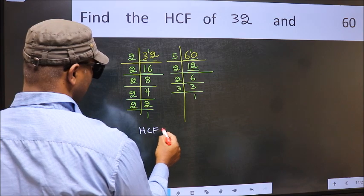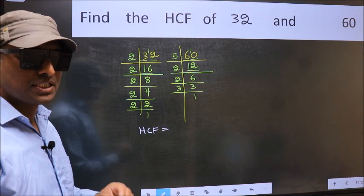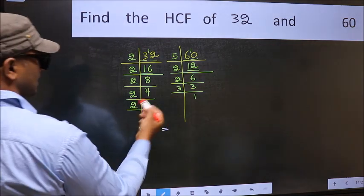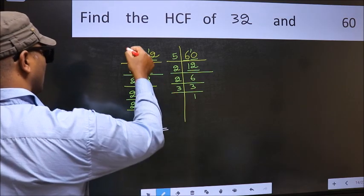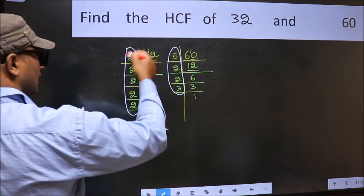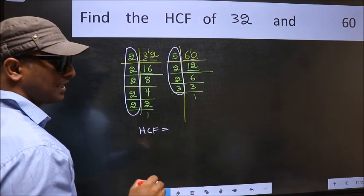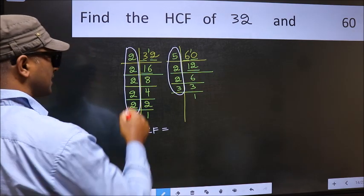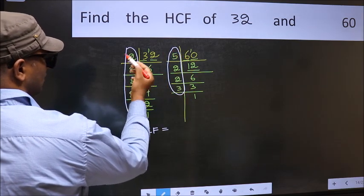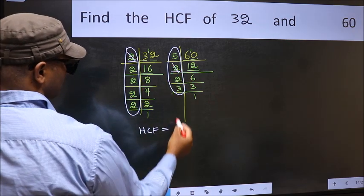Therefore, our HCF is, HCF is the product of the numbers which should be present in these two places. So, now let us find the numbers which should be present here and here. Starting with the number 2. Do we have 2 here? Yes. So, cut 2 right here.